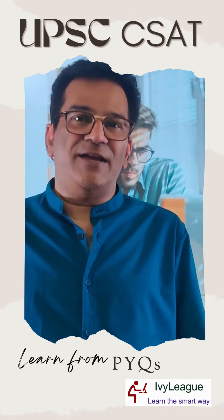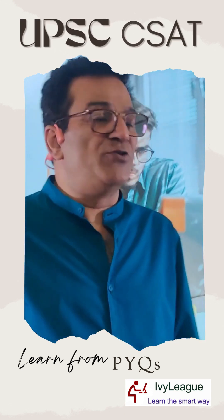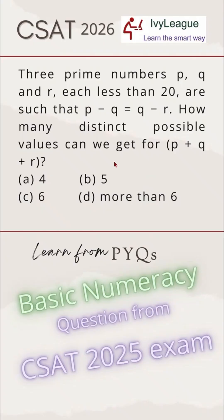Good morning, let's look at a second previous year question from basic numeracy. This is a question from CSAT 2025 examination. The question says three prime numbers p, q, and r, each less than 20, are such that p minus q is equal to q minus r. How many distinct possible values can we get for p plus q plus r?